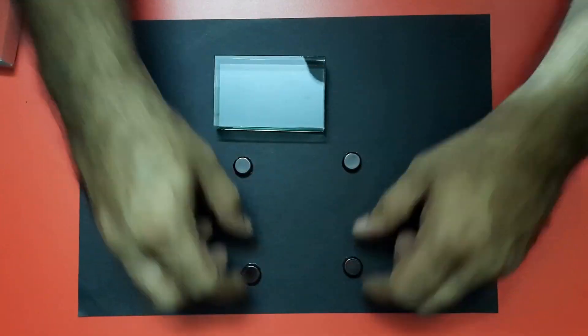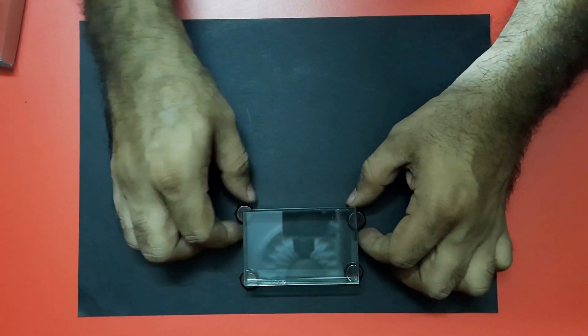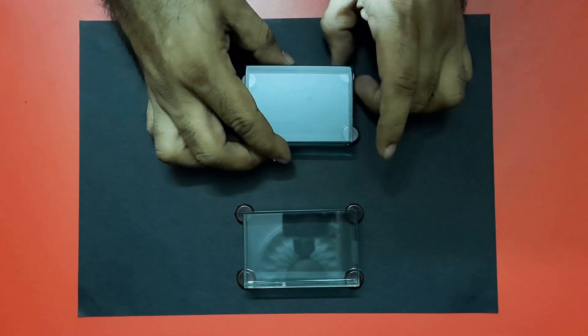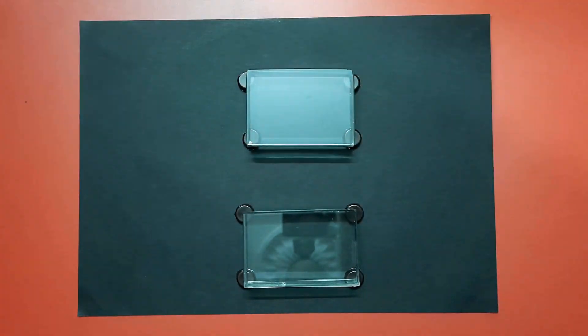Now we will use two glass slabs to show how ray of light goes from air to glass slab one, then air, and again to glass slab two.